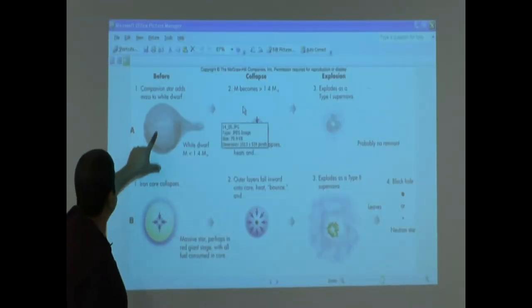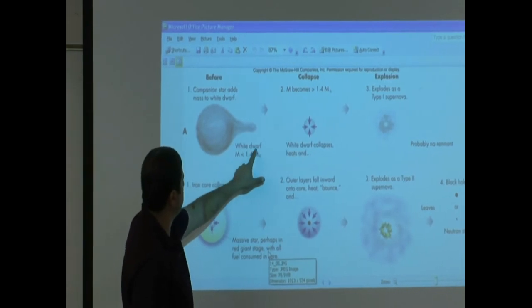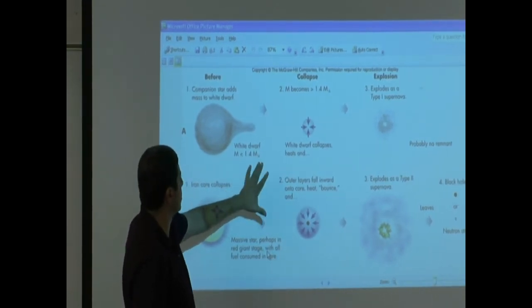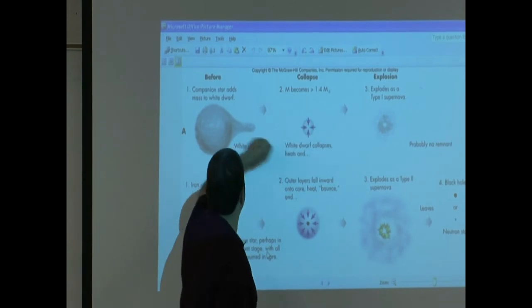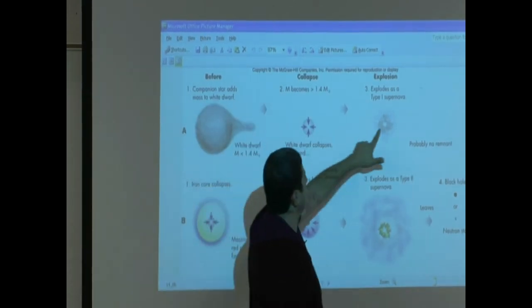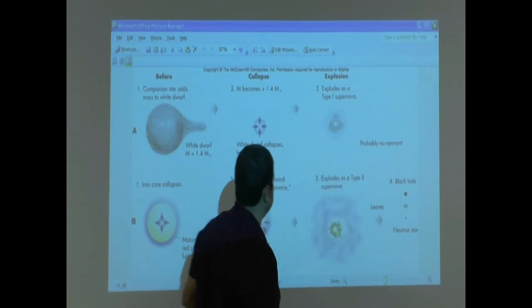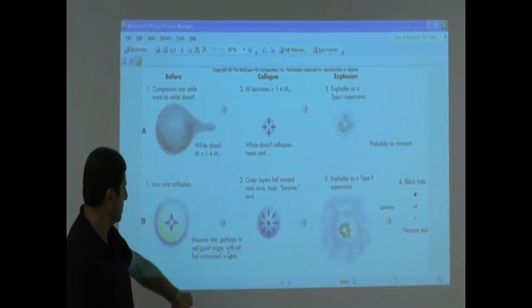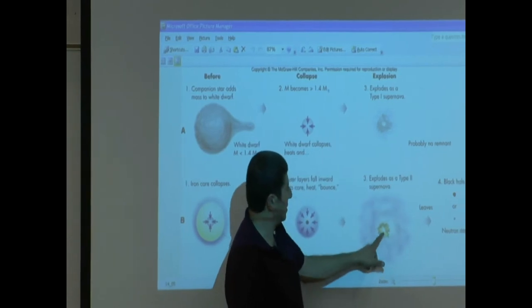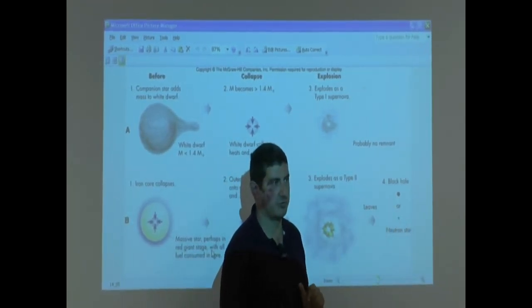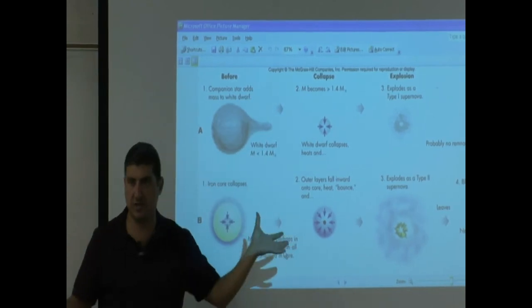So it's always nice to compare them. See here, this is the Type 1 supernova. White dwarf sucks the mass. When the white dwarf's mass is less than 1.4 solar mass, it's okay. But as long as the mass of the white dwarf exceeds 1.4 solar mass, the white dwarf collapses, explodes, takes this out with it. When you look at the center of that kind of supernova, there's probably no remnant left. Nothing in the middle. This is the regular one. Massive star, perhaps in the red giant stage with all of the fuel consumed. The core collapses, explodes, Type 2. When you look at the core, neutron star or black hole. So if you go and observe this, and if it verifies your theory, then our theories are correct.